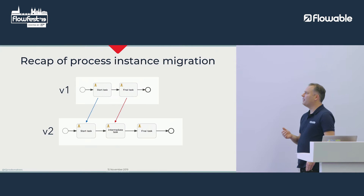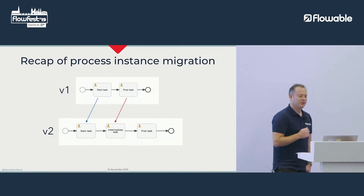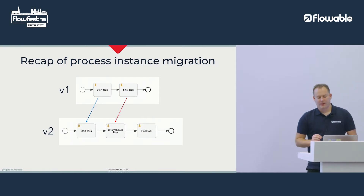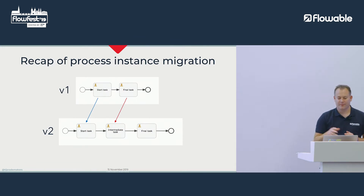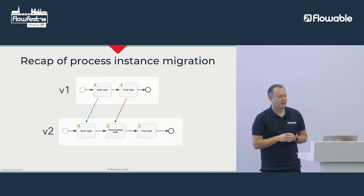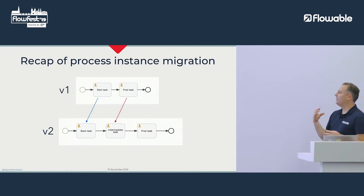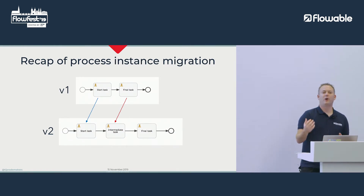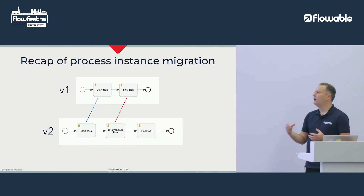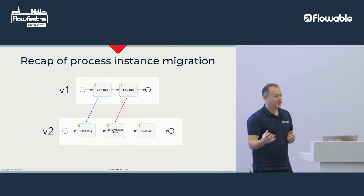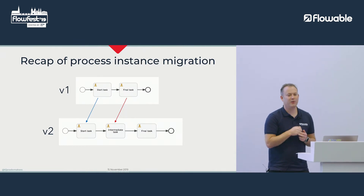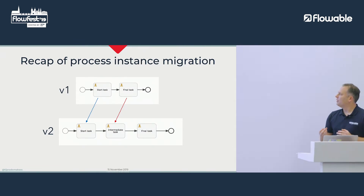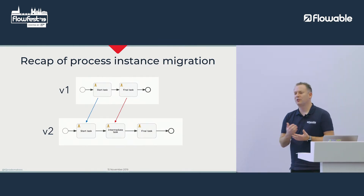Just a recap of what we support: we have v1 and v2 of the same process definition key, two tasks available in both definitions, and one additional task. If you have the same task in the new version, we do auto-mapping of these tasks, so you don't have to say explicitly when migrating that you want to migrate from start task to start task in v2. That's done automatically because we can match the same element ID. But if you want to make it more specific, you need to tell that to the migration logic.